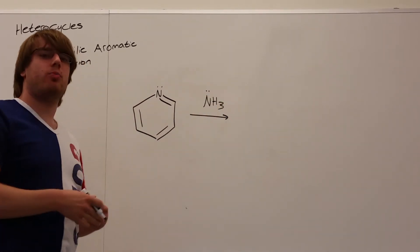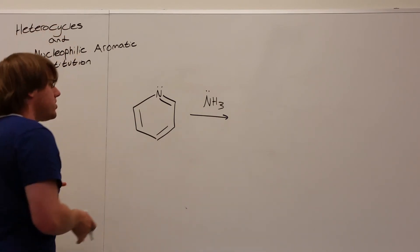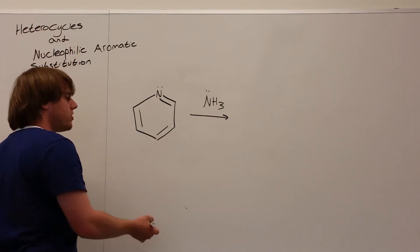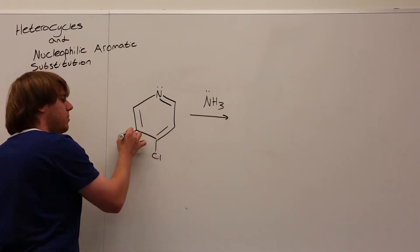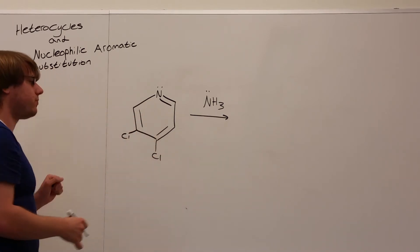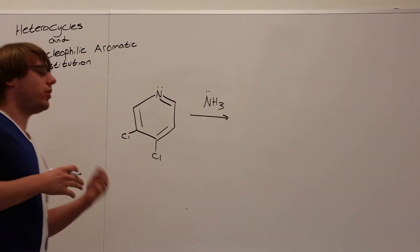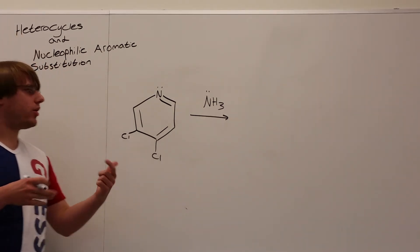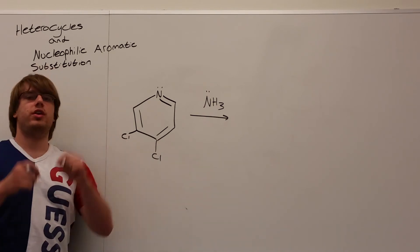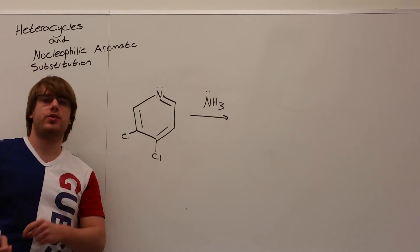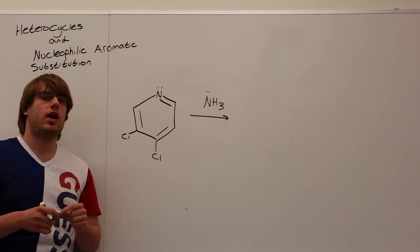NH3 isn't negative, but we know it has lone pairs, so it'll be able to do a attack the way we want. Now I'm going to put two leaving groups on this molecule, one in the para position and one in the meta position relative to that nitrogen. And we're going to figure out what the major product looks like.